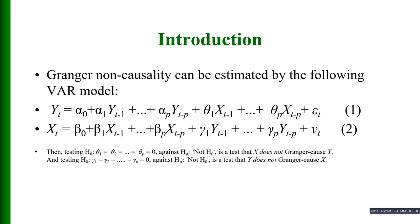Granger non-causality can be estimated by the following VAR model with two equations. The Y equation is: Y_t = alpha_0 + alpha_1*Y(t-1) + ... + alpha_p*Y(t-p) + theta_1*X(t-1) + ... + theta_p*X(t-p) + innovation. Similarly, the X equation is: X_t = beta_0 + beta_1*X(t-1) + ... + beta_p*X(t-p) + gamma_1*Y(t-1) + ... + gamma_p*Y(t-p) + innovation v_t.